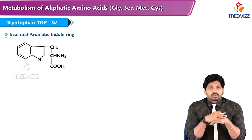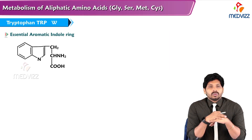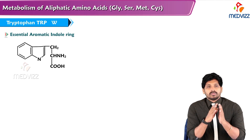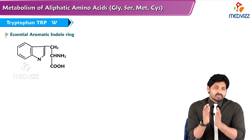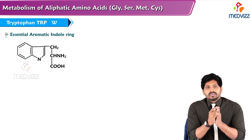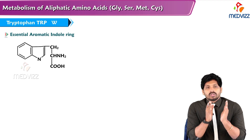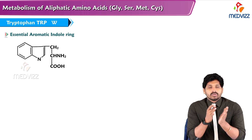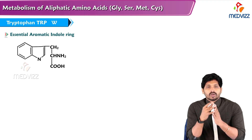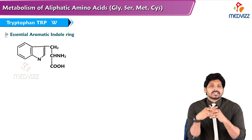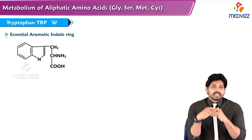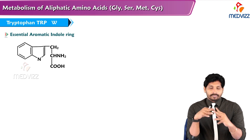Hello everyone, myself Dr. Suresh, and in this video I will be talking about the metabolism of aromatic amino acid tryptophan. In our previous videos we discussed phenylalanine and tyrosine, and the third aromatic amino acid here is tryptophan, which is essential and glucogenic in nature.